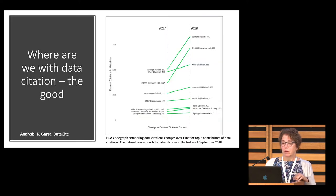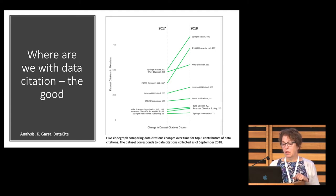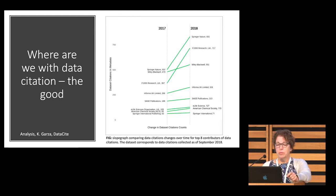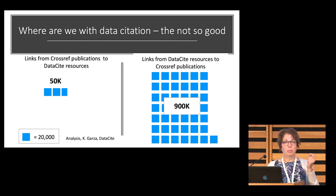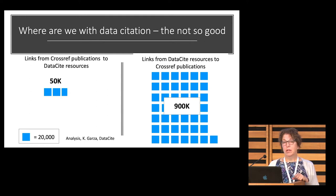What I'm showing here is where we are with data citation. We took the top eight providers of data citations within Crossref, and you can see an upward curve with Springer Nature and F1000 — there's a real increase in data citation. But if you look at where data citations are coming from, it's not so good. If you look at the links from Crossref publications to DataCite resources, there's only 50K. If you look at DataCite resources to Crossref publications, we have 900K. So I think the publishing community has a little bit of work to do here, but we're here to help.